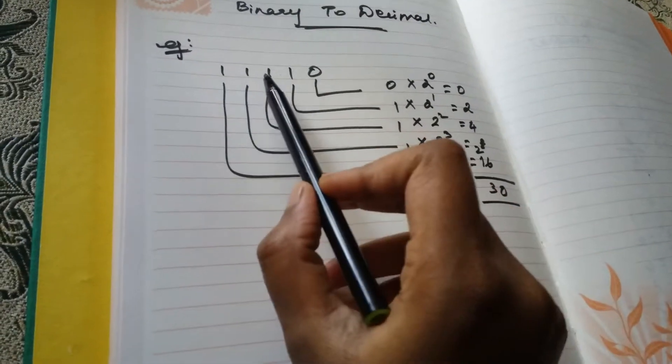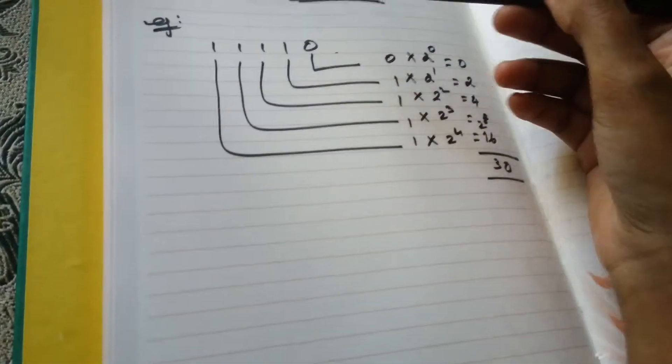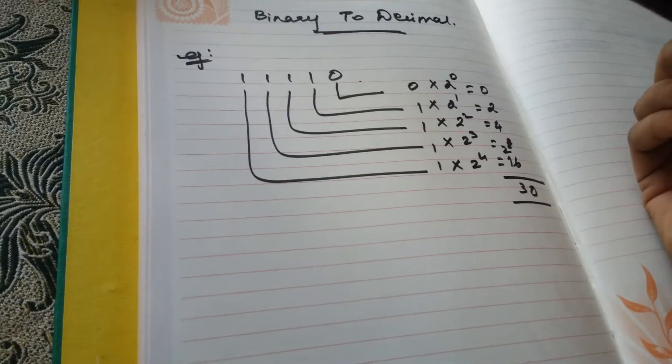Here I've taken a five-digit binary number: one, one, one, one, zero. So to convert this, this is a conventional way. After you practice well, you can use some other shortcuts too.